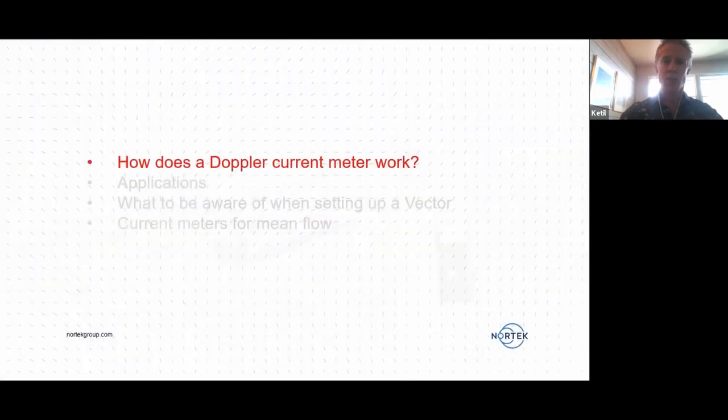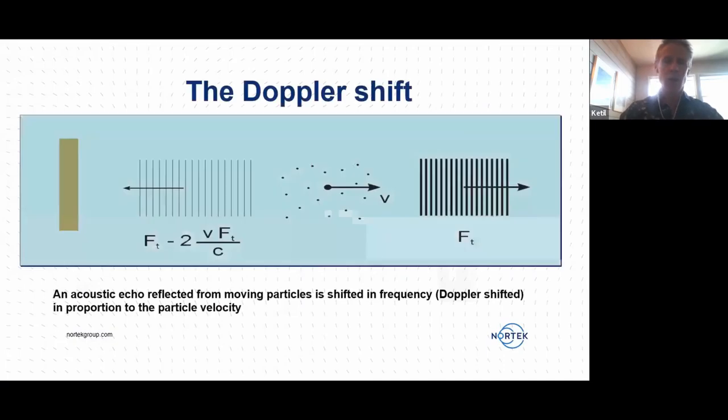Firstly, let's talk a little bit about how a Doppler current meter works. Some of you may be familiar with this, but it's nice to know a little bit about it anyway. Basically, how these instruments are constructed is that they have what's illustrated here, this brown square is what was illustrated to be a transducer. So that is a ceramic plate that vibrates at a certain frequency.